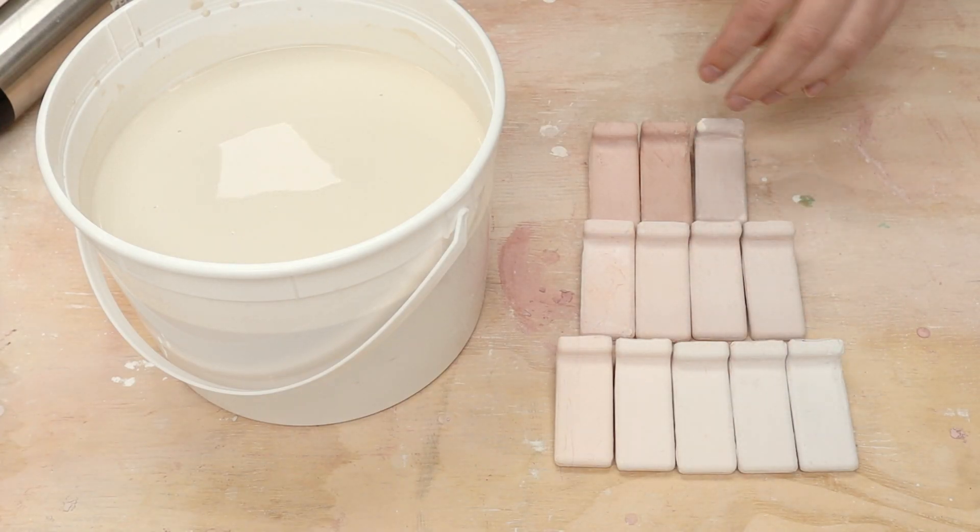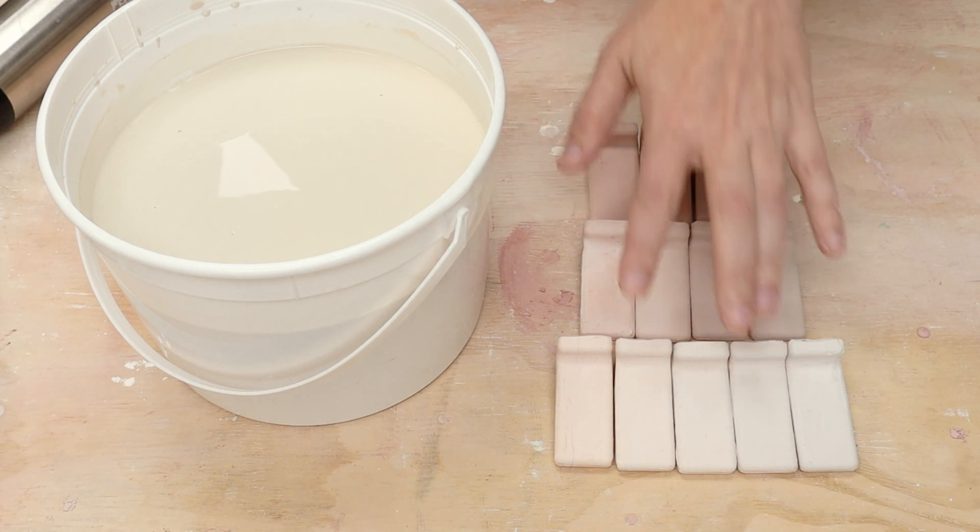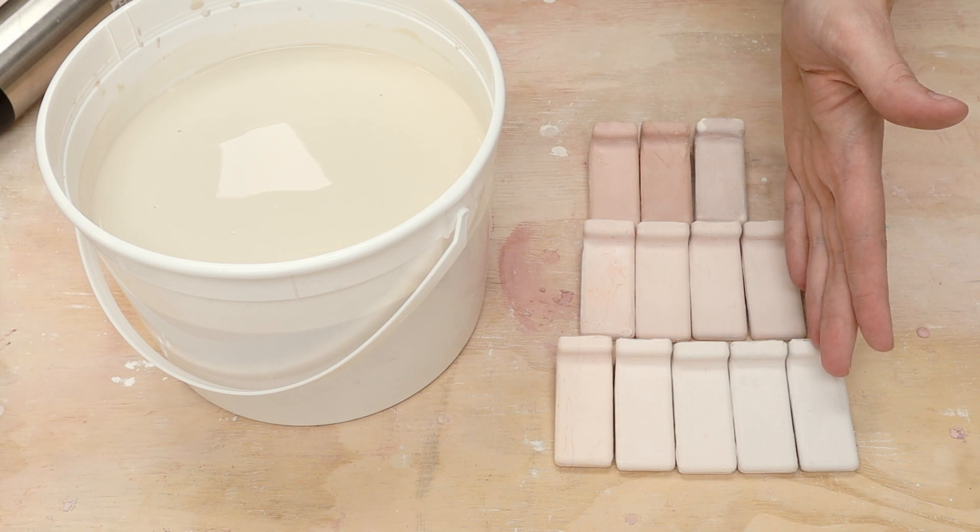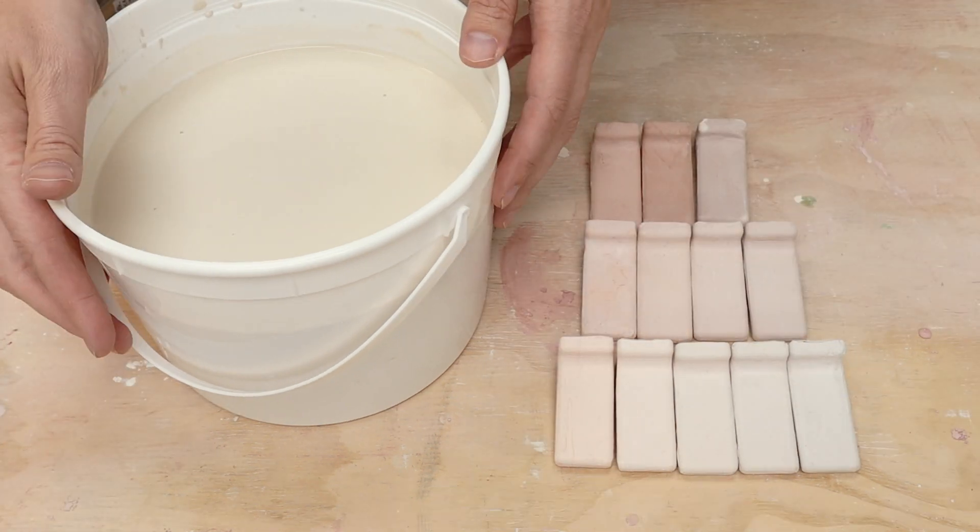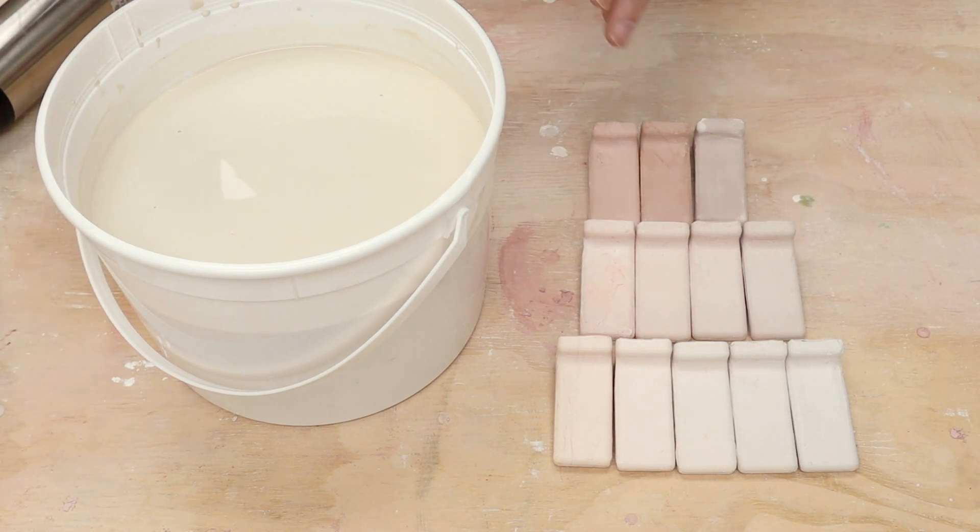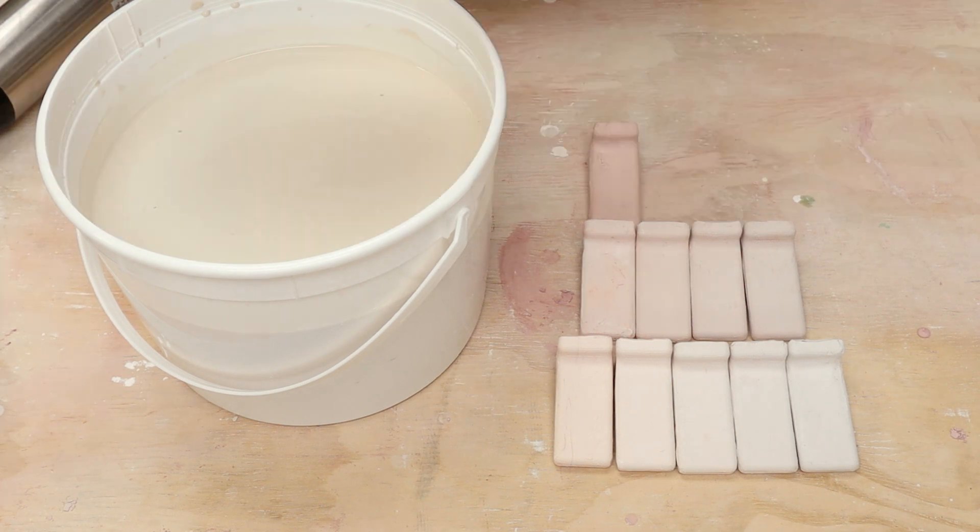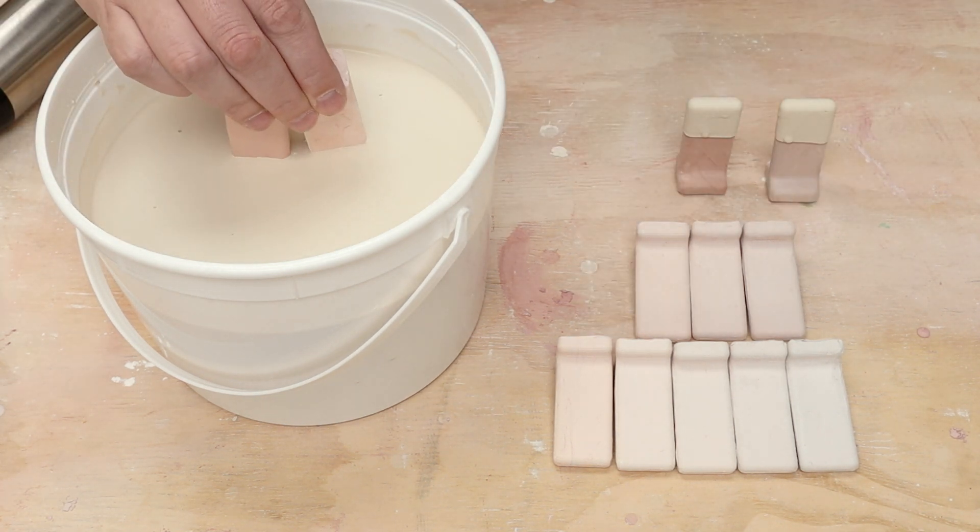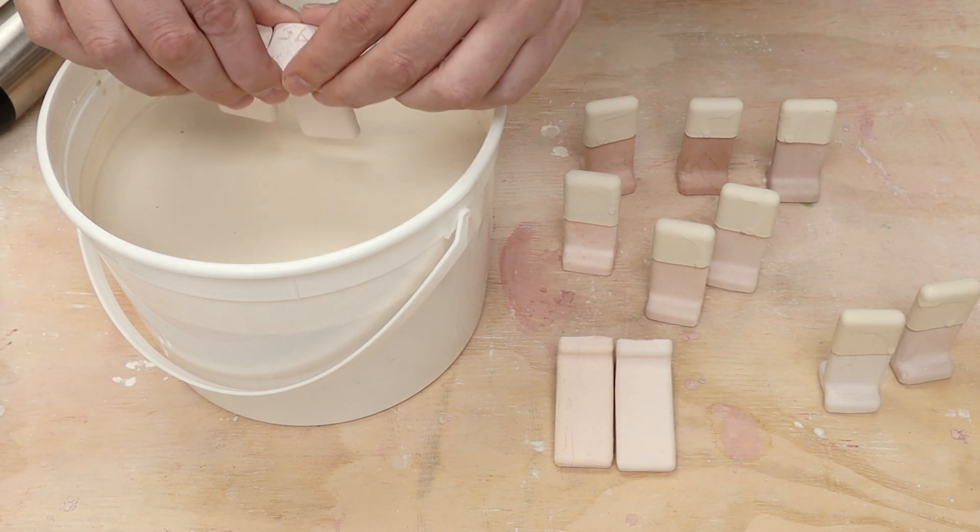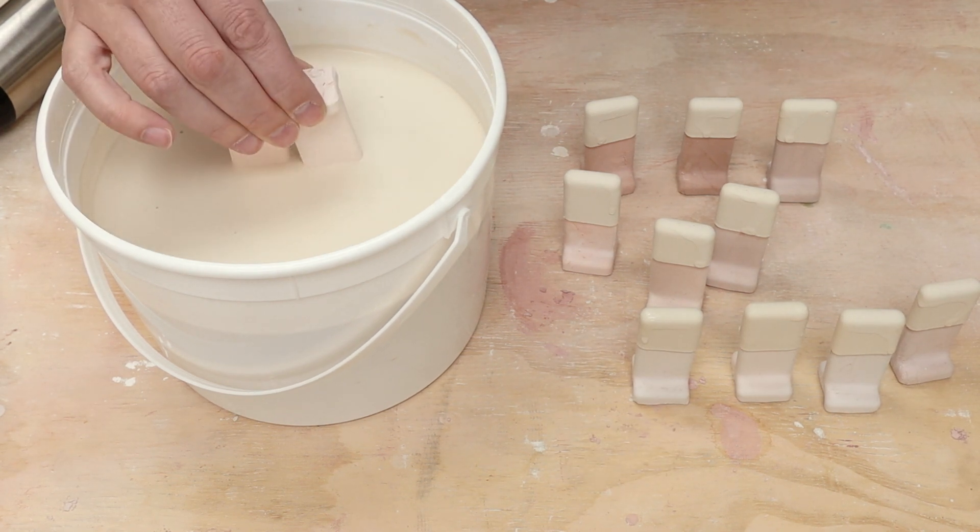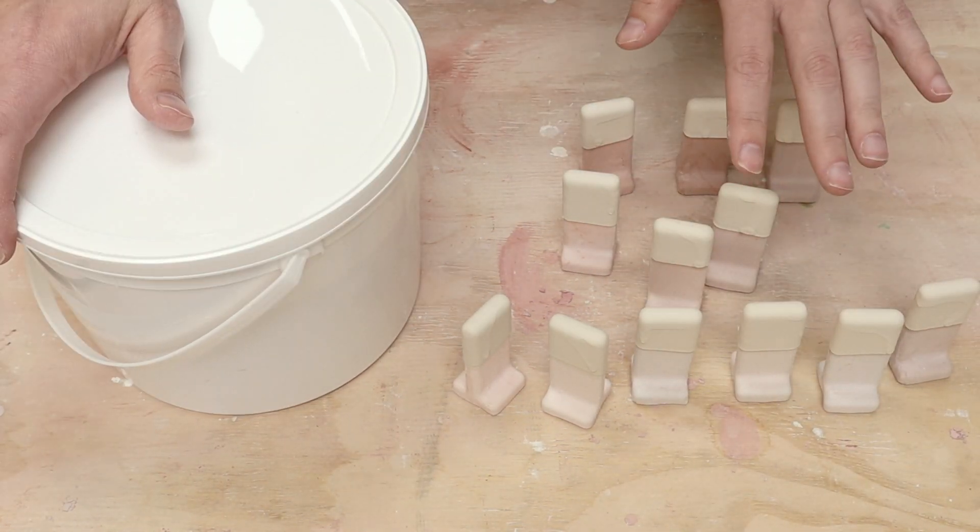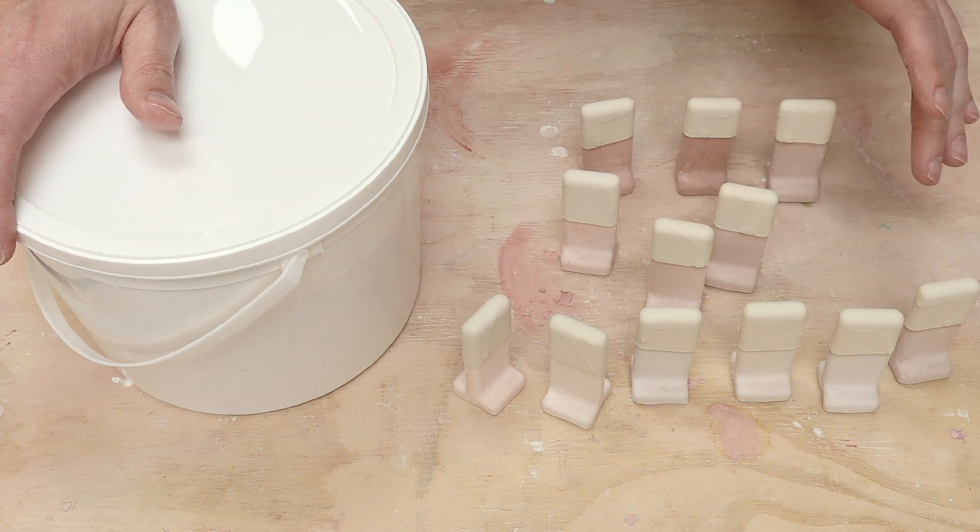And here are all the test tiles out of the bisque fire. These go from the four percent total included, two percent to one percent. And then going from this side where I have the most cobalt in it over to this side where I have the least. I have a batch of glaze I just mixed up. This is the base glaze from the first five recipe that I have in a previous video. So I'm going to go ahead and dip my tiles. All right, done with the glaze, I'll let these dry. I'm going to put them into my next glaze firing, which is coming up very soon. Then we'll pull them out and take a look.